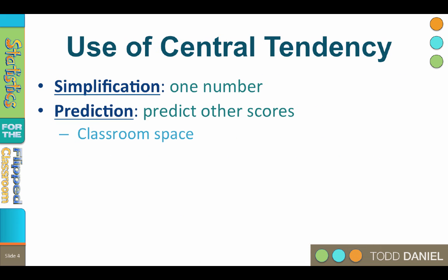Measures of central tendency offer the benefit of simplification. The whole sample of raw data is difficult to understand, but a measure of central tendency gives us a single number that represents the entire data set. Central tendency also has the benefit of prediction — knowing a measure of central tendency can help us predict other scores or estimate future needs, and this is true even if the measure of central tendency is not in the actual data set.